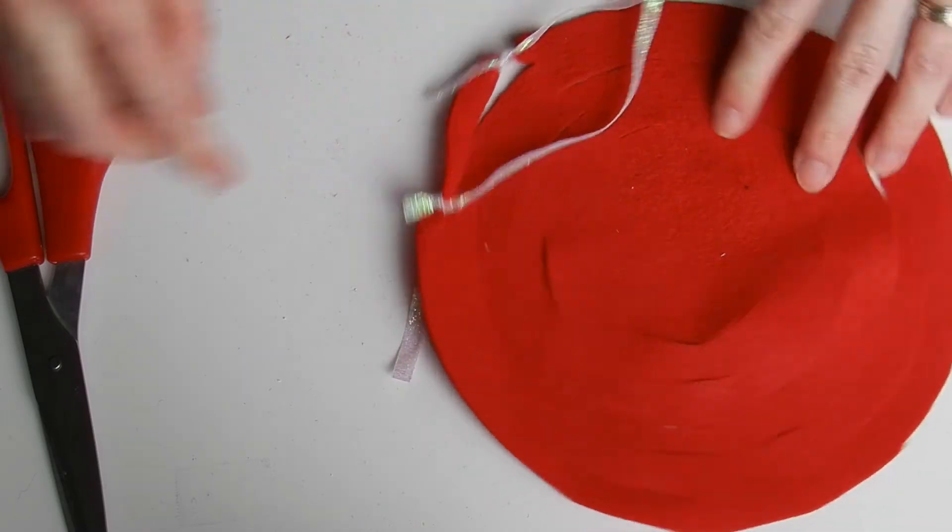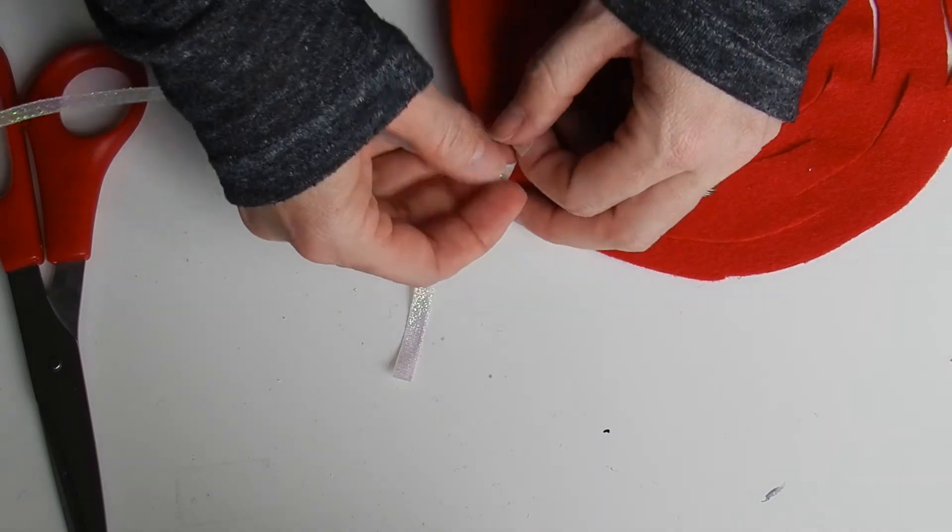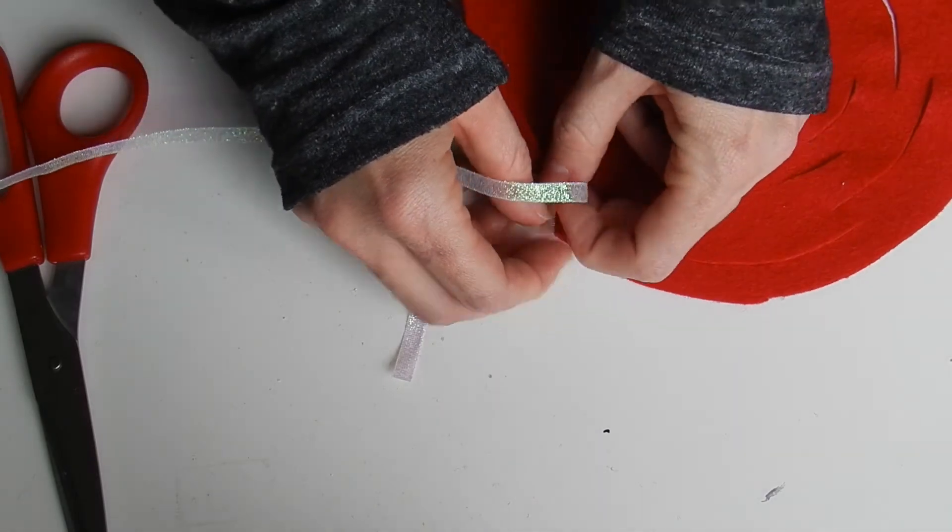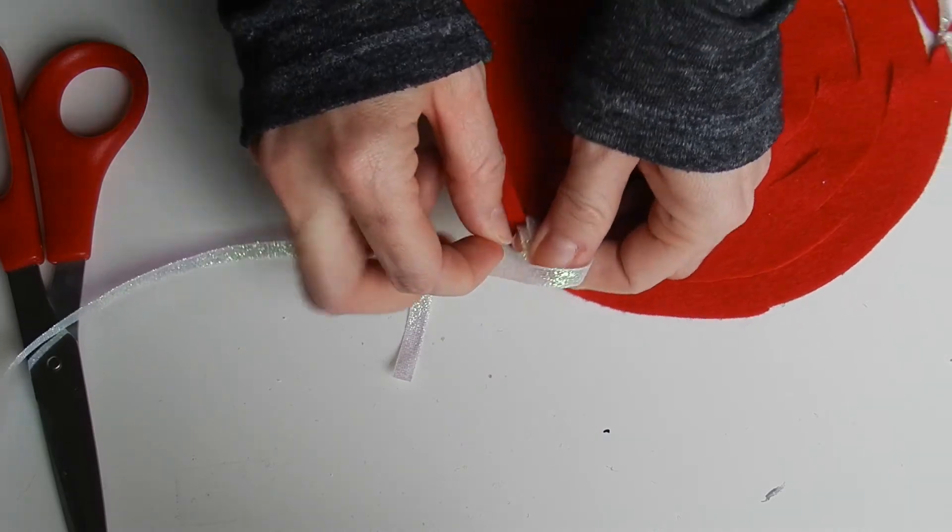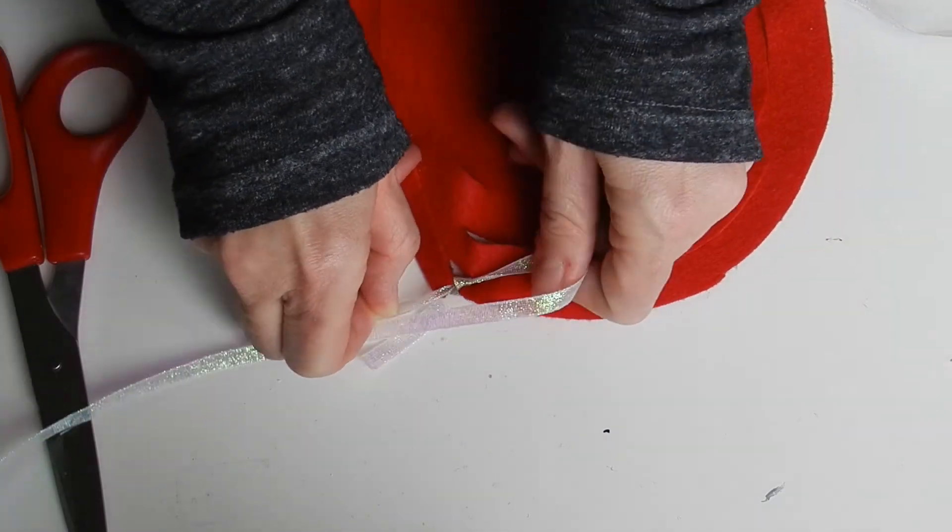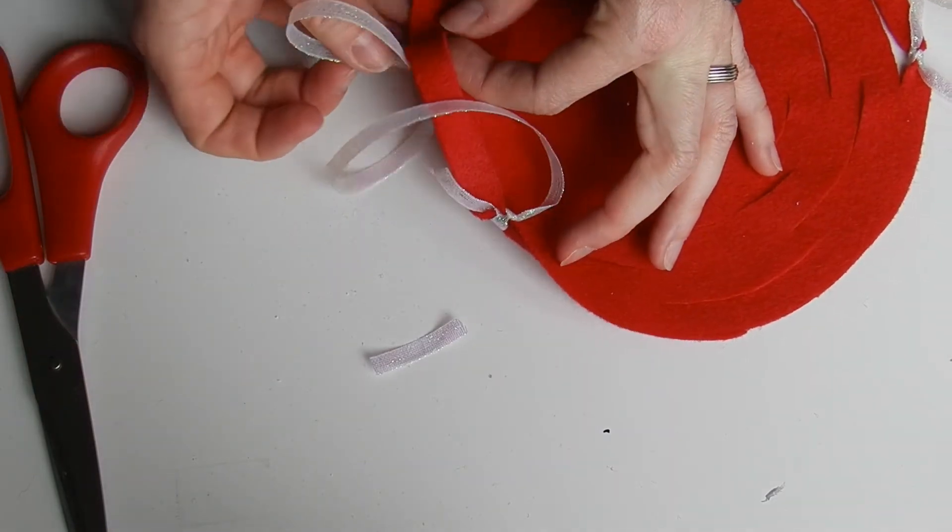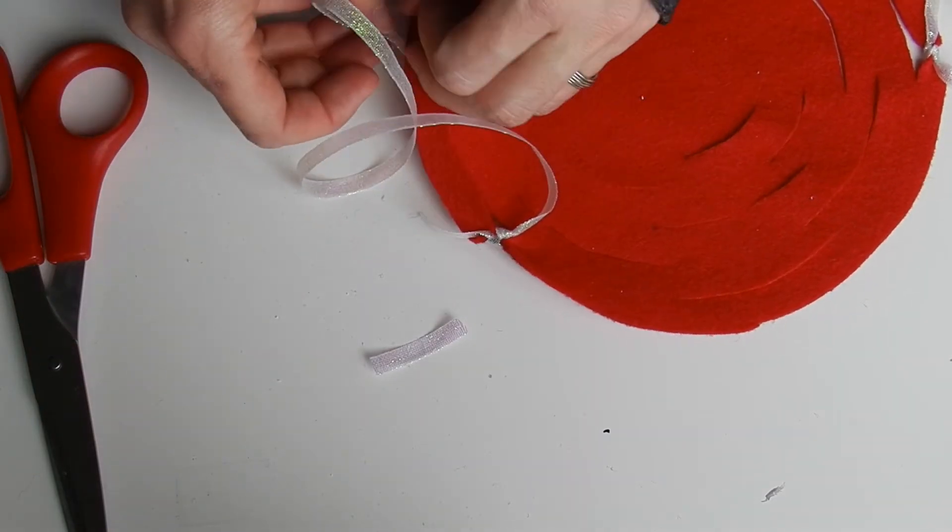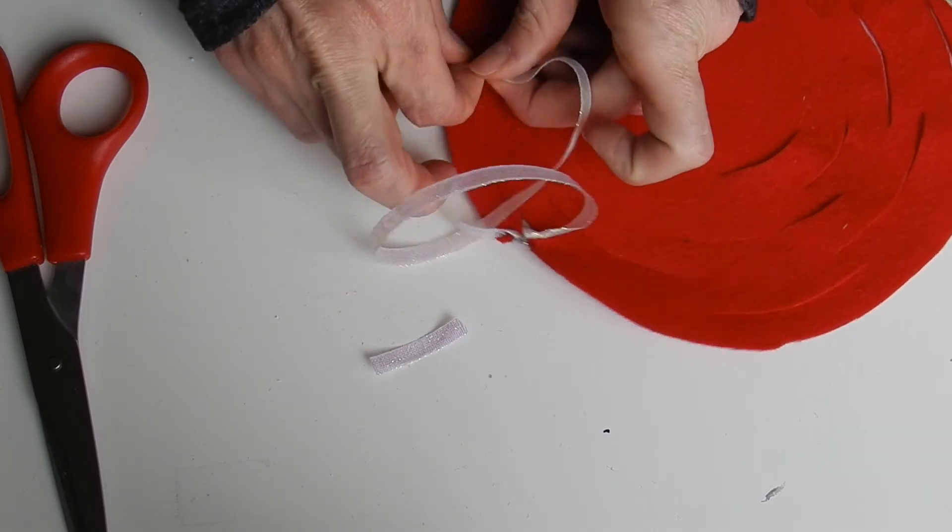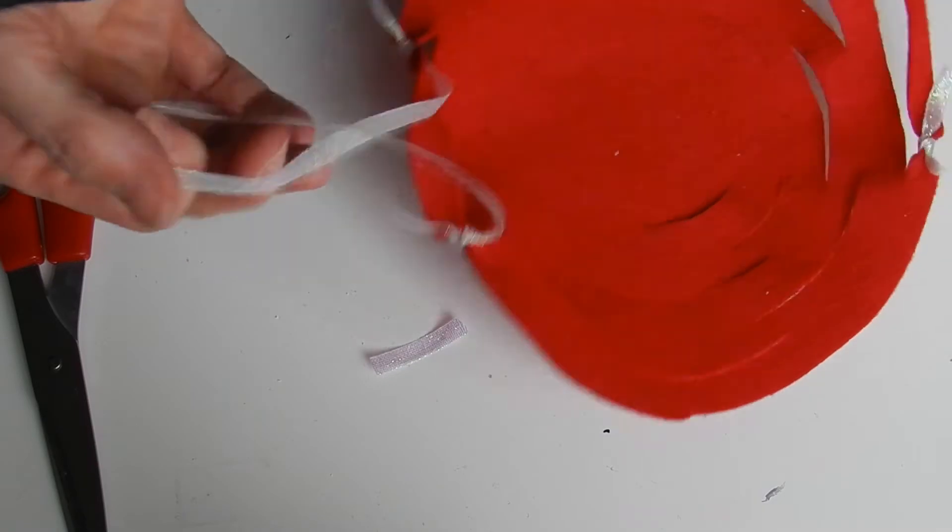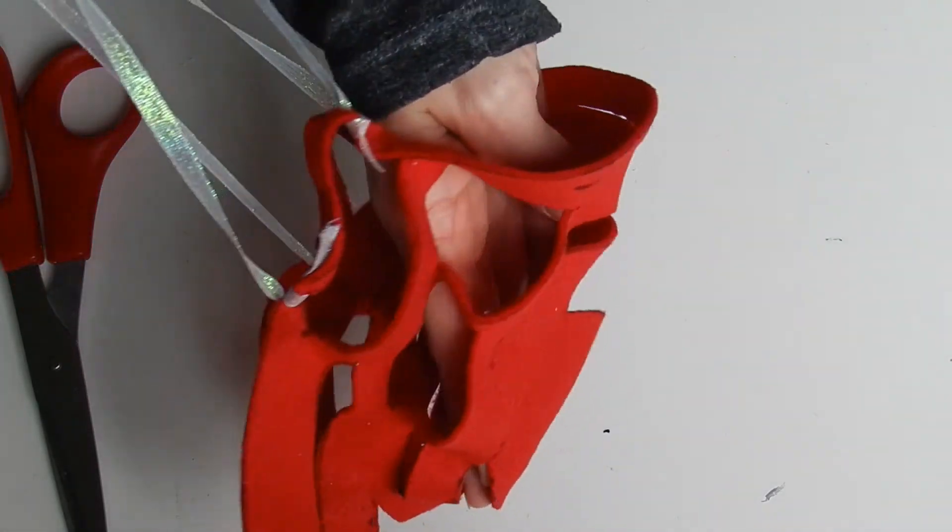And you're going to do this on both sides of the circle. So find the opposite slit to the one you've tied the first ribbon onto and tie your second ribbon on in the same way. Now if you had extra ribbon at home you could also tie it onto the other sides and bring the four pieces of ribbon up, but I just have two.